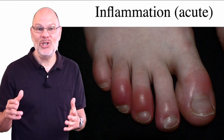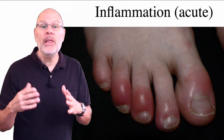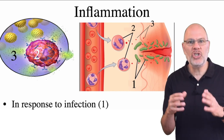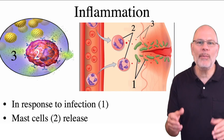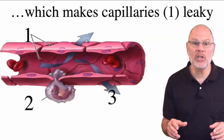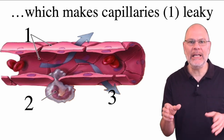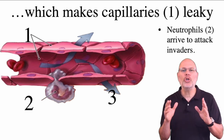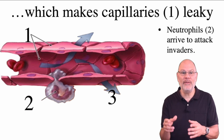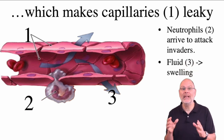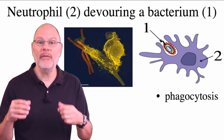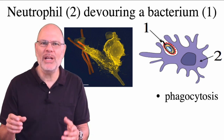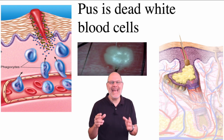We've all had the experience of having an injury and experiencing the heat, swelling, and redness known as inflammation — this is also part of non-specific immunity. In response to an infection, immune system cells called mast cells release chemicals called histamines. Histamine makes capillaries leaky, which allows a common type of phagocyte called a neutrophil to leave the capillary and enter the infected area where it goes on the attack. Fluid also leaves the capillary, leading to swelling. Enough gorging on bacteria will kill the neutrophil — millions and billions of these dead white blood cells accumulate as pus. Pus is dead white blood cells.